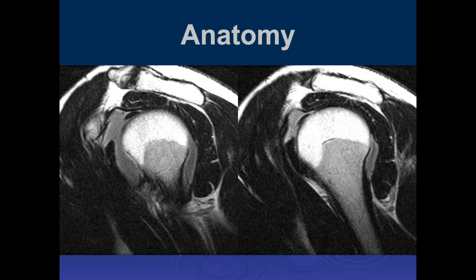Going farther laterally we can see the acromion process shape, the AC joint, the rotator cuff muscles and tendons, and the long head of the biceps tendon in the joint space. With a larger effusion or contrast you can often see the biceps tendon nicely in the sagittal plane. You can follow it from its attachment to the superior glenoid out into the joint space and down into the intertubercular groove — a common location for biceps tendinopathy.